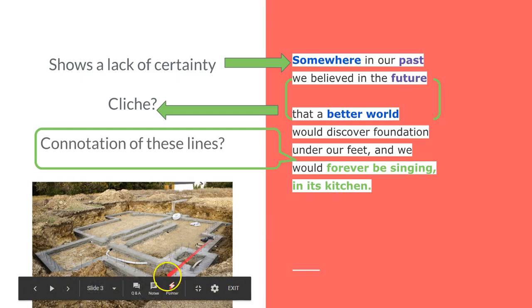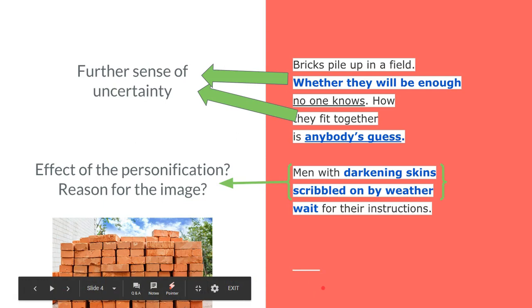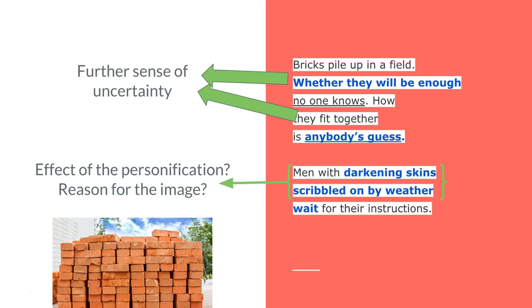The sense of uncertainty that started with the 'somewhere'—somewhere in the future, we don't have a specific date—is further emphasized in this third stanza where we've got this image of bricks piling up in a field.